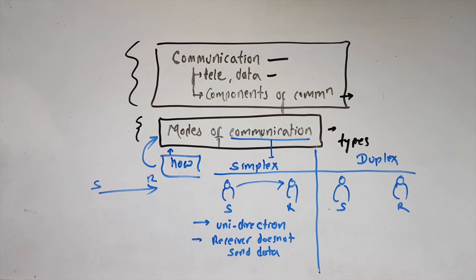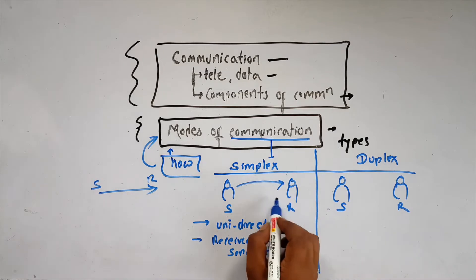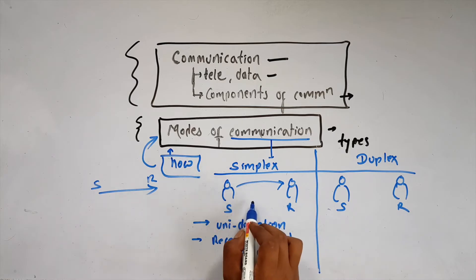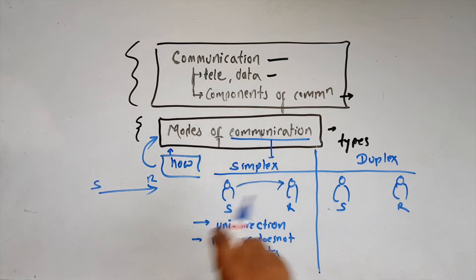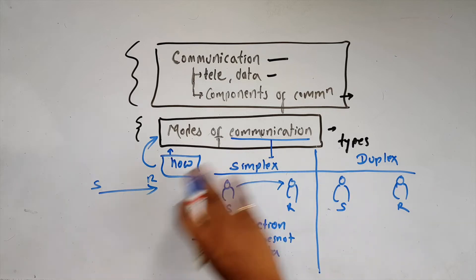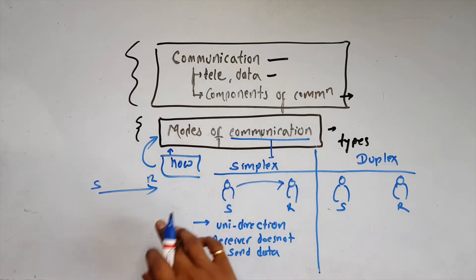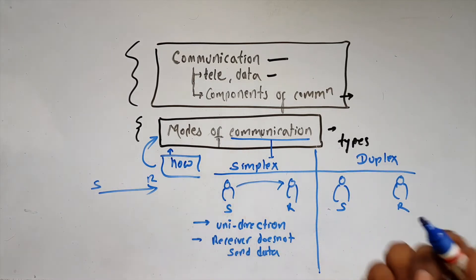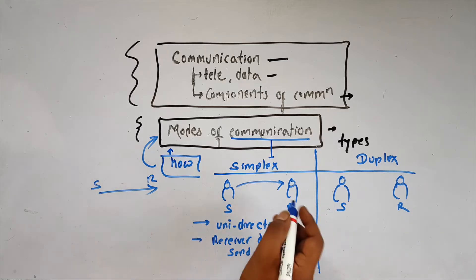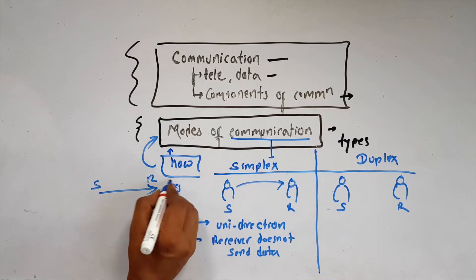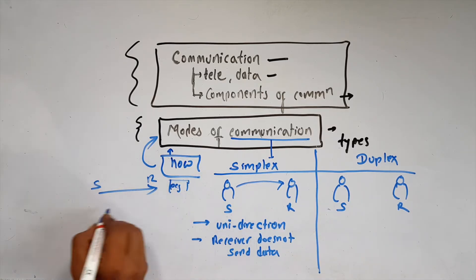In simplex mode, the receiver is not allowed to send data or provide feedback to the sender. It is always a unidirectional mode of communication. The best example of simplex communication is radio and television.